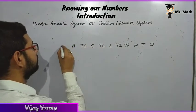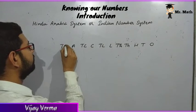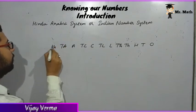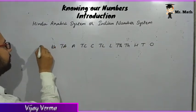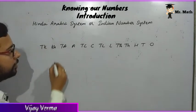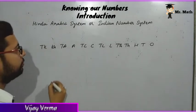Arab, ten arab, kharaq, and ten kharaq — these are place values in the Indian number system.